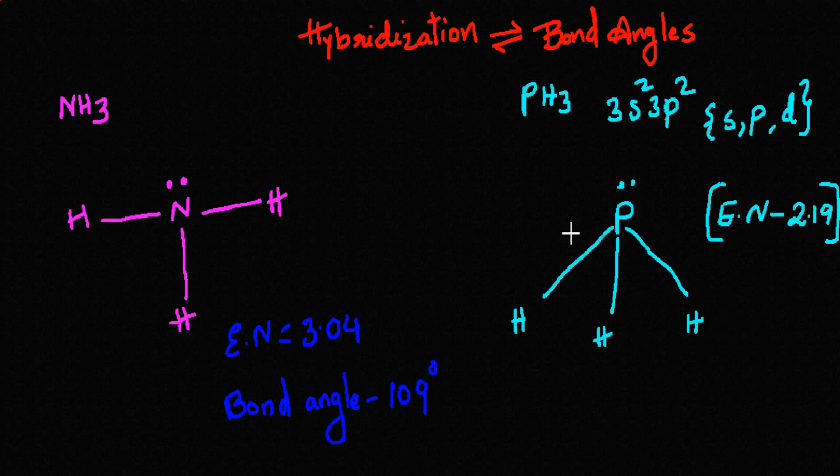The valence electrons of phosphorus are present in 3s2 and 3p3 — note that 3p2 shown on screen is incorrect; it should be 3p3. So 3s2 and 3p3 are the five valence electrons of phosphorus. At energy level three, there is also a d orbital which is completely empty. Naturally, the size of phosphorus is bigger than nitrogen.